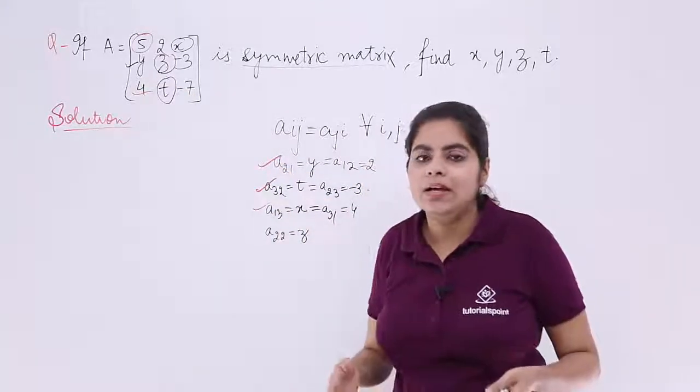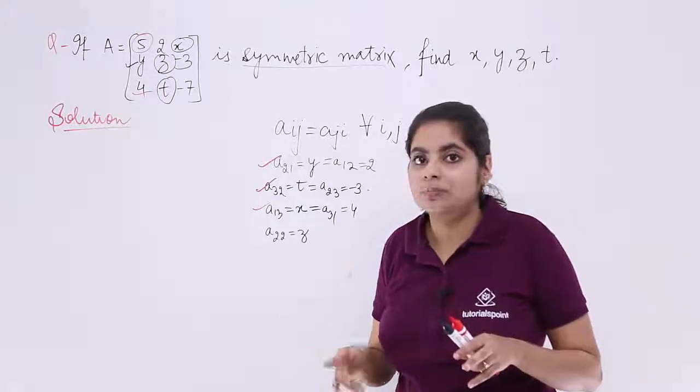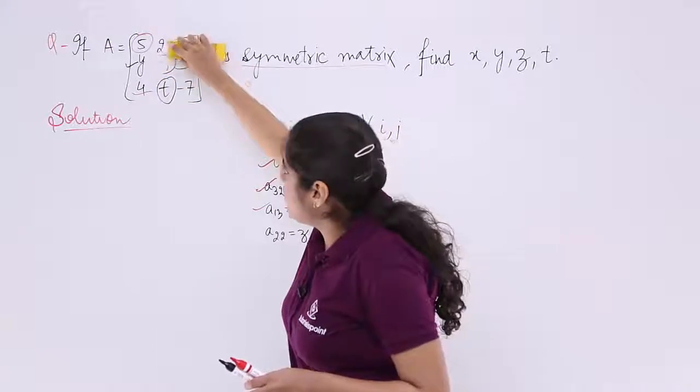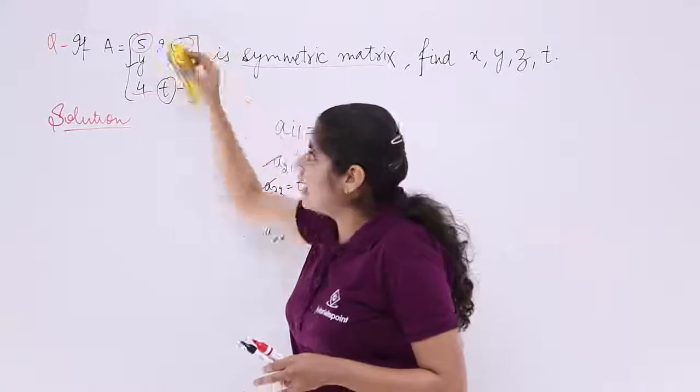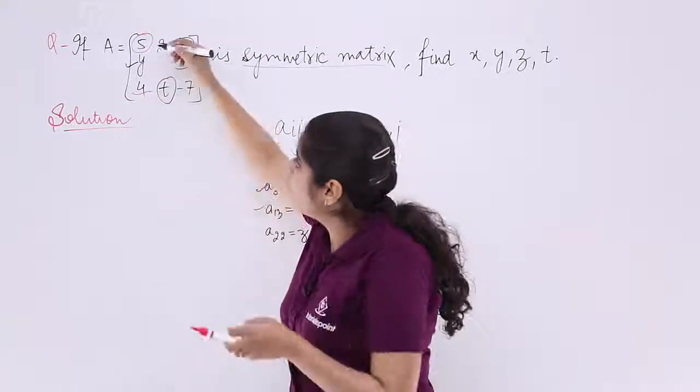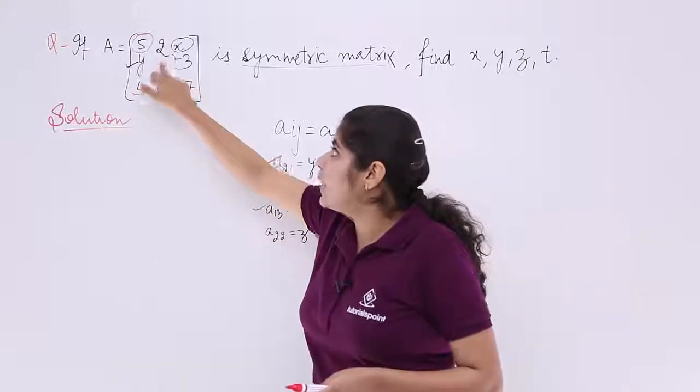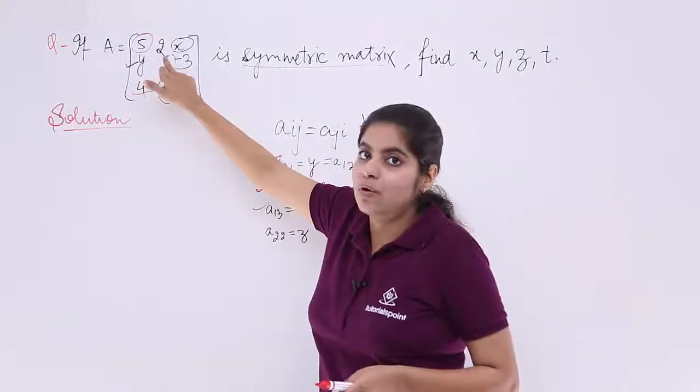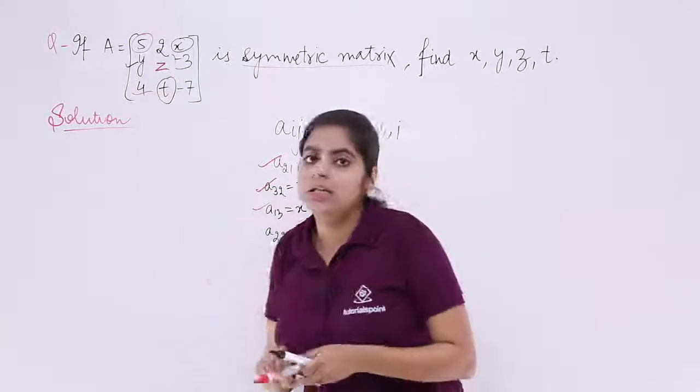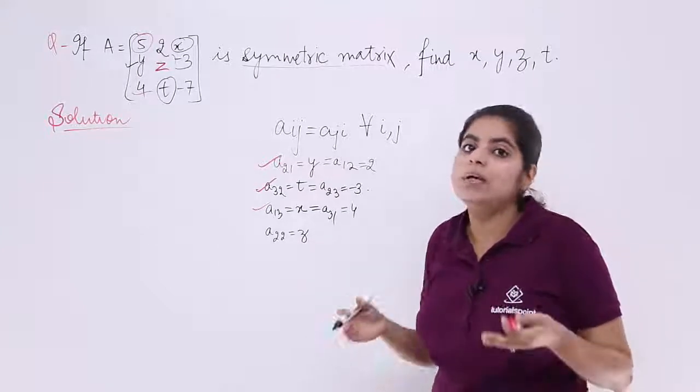Now, if you interchange then also A_22 will be equal to z only. That means even upon interchanging no things change. So z can have any value. z can be 1, 2, 3 or 10. The value does not determine whether it is symmetric or not. What I mean to say is if z had been 0, then also the matrix was symmetric. Anything else, then also it was symmetric. That means you place any value here, 5 or 6 or anything, the answer does not change.